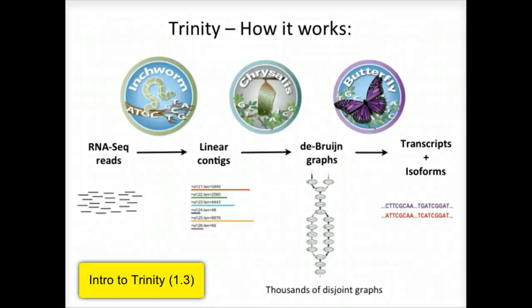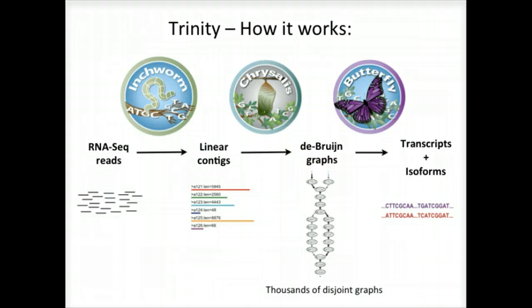Here is a high-level overview of the whole Trinity assembly algorithm. We call it Trinity because it involves three major steps that we've built into three separate software modules. It starts with Inchworm, which first assembles the RNA-seq data into linear contigs. Then Chrysalis groups contigs that are related due to alternative splicing or gene duplication and constructs de Bruijn graphs. Finally, Butterfly examines reads in the context of the de Bruijn graphs and reports final full-length transcripts and isoforms of transcripts.